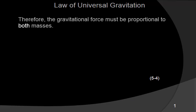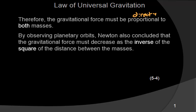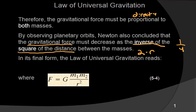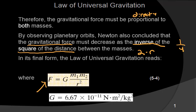What they discovered was that the gravitational force is directly proportional to both masses. By observing planetary orbits, Newton also concluded that the gravitational force must decrease with the inverse square of the distance between them. If you double the radius, you only get a fourth of the force; tripling the radius gives a ninth of the force. The formula is: F = G × M1 × M2 / r², where G is 6.67 × 10⁻¹¹, and the radius in meters is squared.